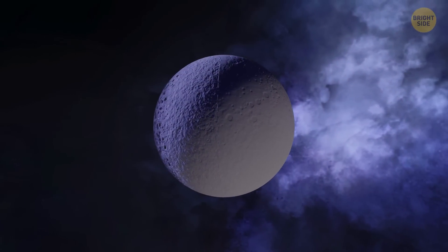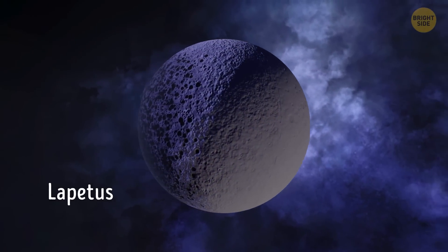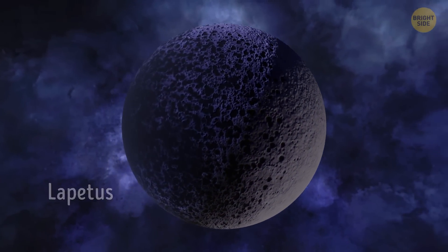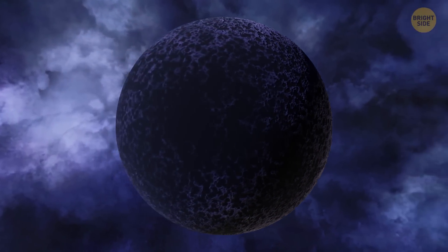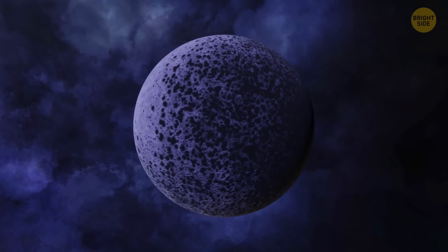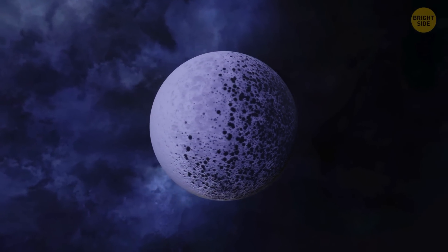One of Saturn's moons, Iapetus, has a unique color. It's two-toned. One of its hemispheres is light and the other is eerily dark. Scientists haven't figured out this mystery yet.